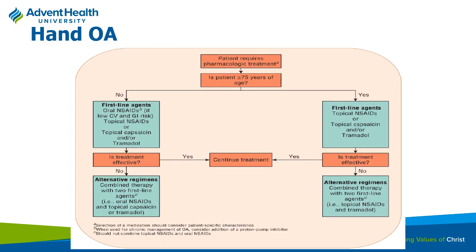For hand osteoarthritis, topical products are very nice because they limit systemic toxicity. NSAIDs can also be useful, but be considerate of age—the older the patient, the less likely they are to tolerate NSAIDs well. Combination therapy is always an option; a patient taking Tylenol and an NSAID can cycle between them, which is sometimes more effective depending on the patient.